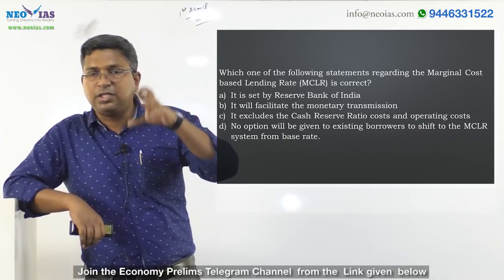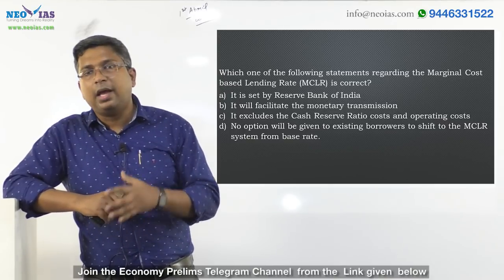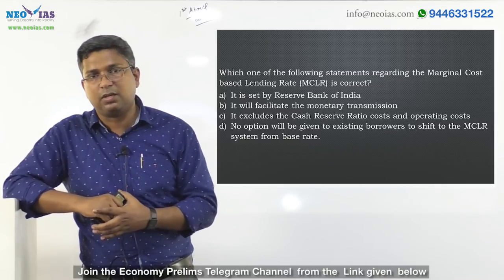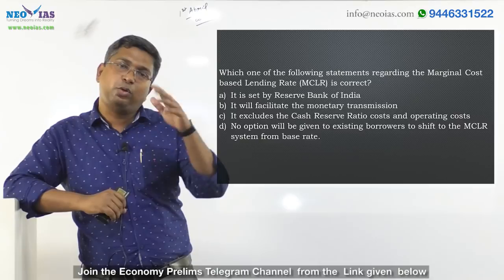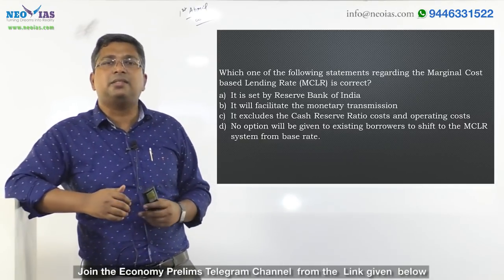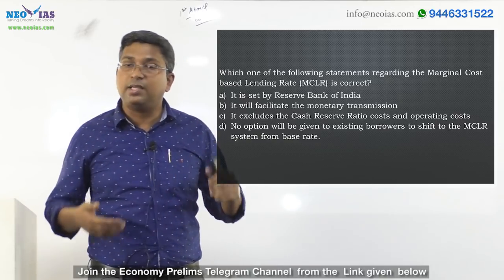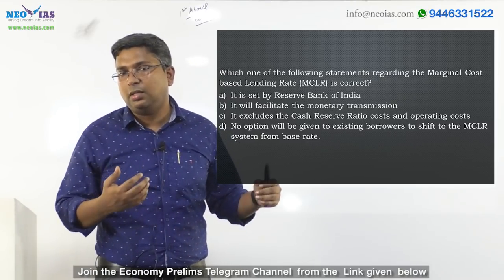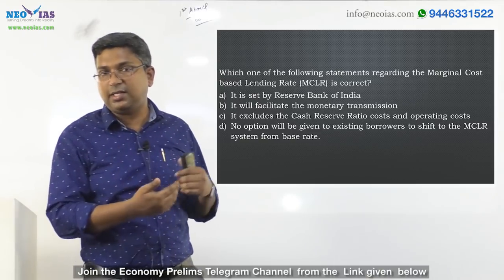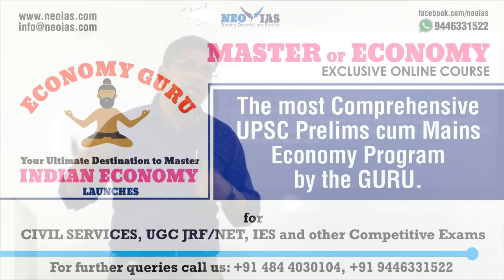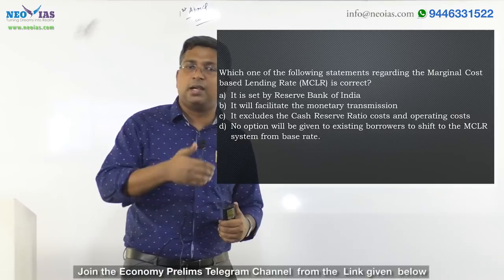Because CRR is not giving the bank any return, all these factors are considered while deciding the benchmark lending rate or MCLR by any bank. Every bank has to announce MCLR regularly and five rates have to be published. The advantage of MCLR is that since repo rate is considered — compared to the earlier base rate system — it helps in monetary transmission. When RBI reduces the repo rate or increases the repo rate, that will be transmitted to the bank because the bank has to make changes to its marginal cost when it issues new loans.